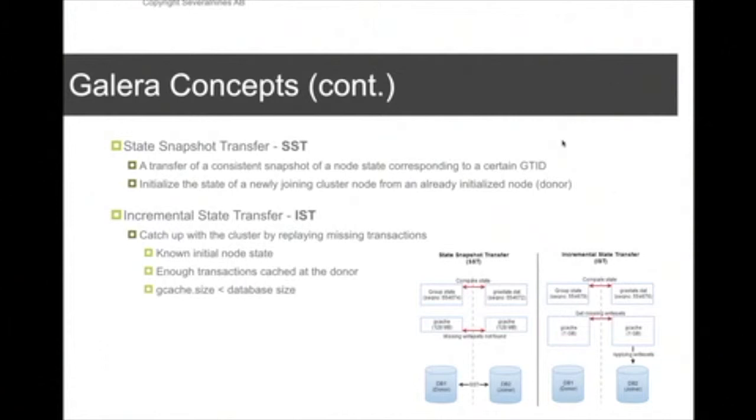But another method is the IST, Incremental State Transfer, and that's much faster because it just transfers the changes that happened during the time that the node was down. It uses a cache setting on the node to be able to cache the transactions that happen during the time, and those changes are the only changes that get sent to the joining node and not the full database. And you can of course change the size of the cache and so on.